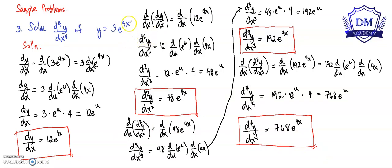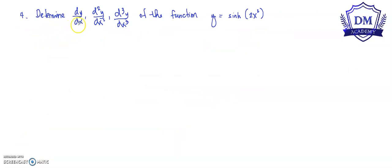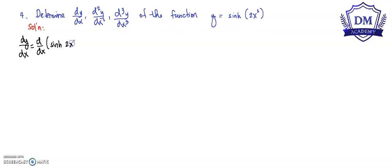Let's have another problem. Let's try a hyperbolic function. Let's determine the first, the second, and the third derivative of the function y is equal to the hyperbolic sine of 2x squared. Let's find first the first derivative — this is the dy over dx, that is the derivative of the hyperbolic sine of 2x squared. Using the chain rule, we have the dy over dx is equal to the d over du of the hyperbolic sine u, multiplied by the d over dx of 2x squared.